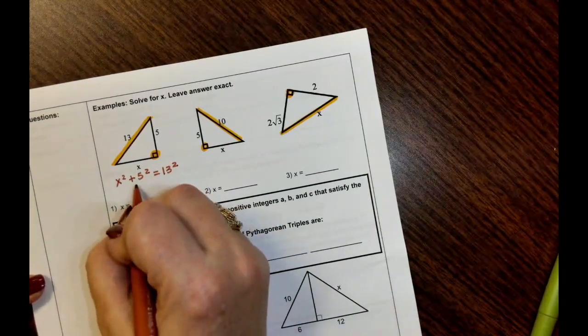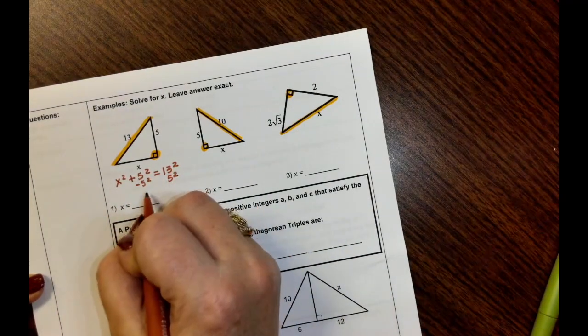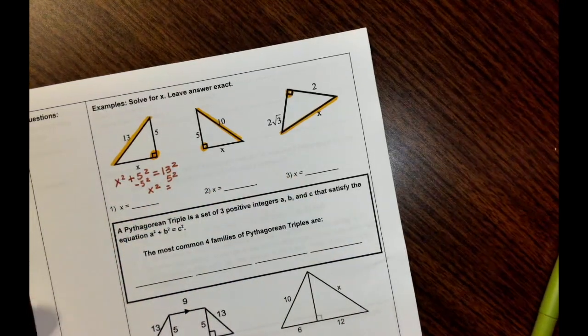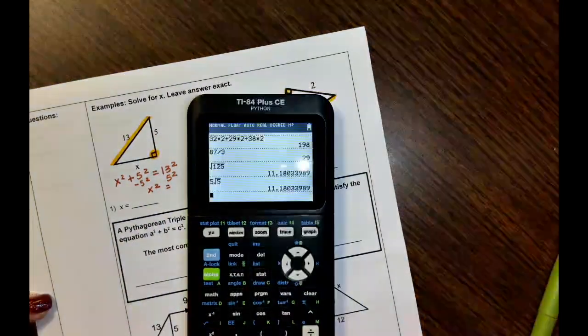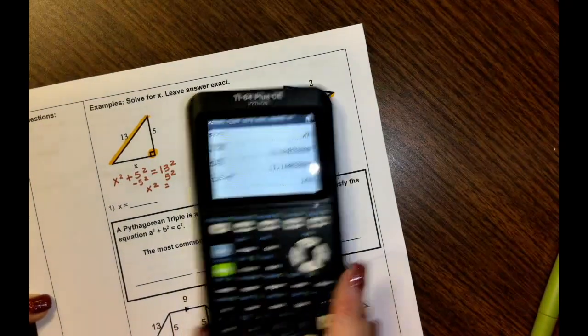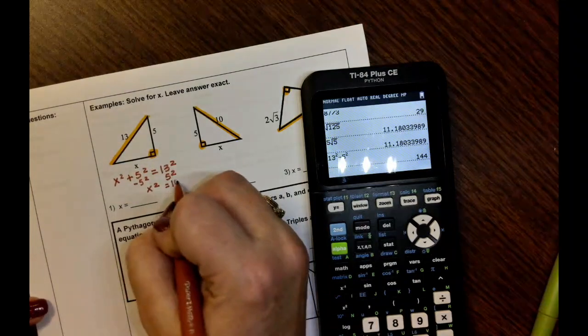So I would subtract five squared from both sides. You can simplify, but we can also handle this all at one time. Type it in your calculator. Thirteen squared minus five squared is 144. So X squared is 144.